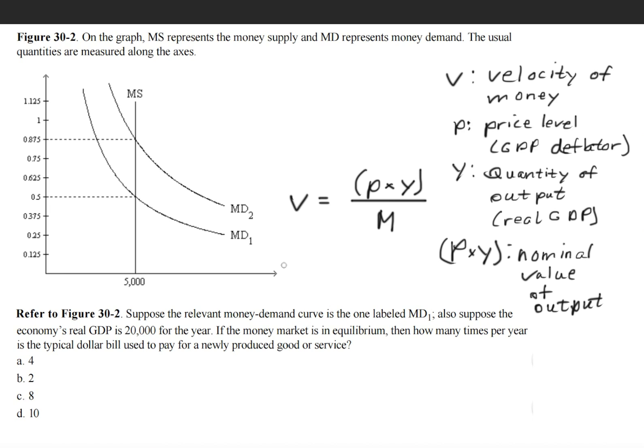But do you understand what each component of the velocity equation represents? So V is the velocity of money. P is the price level or the GDP deflator. Y is the quantity of output or the real GDP.